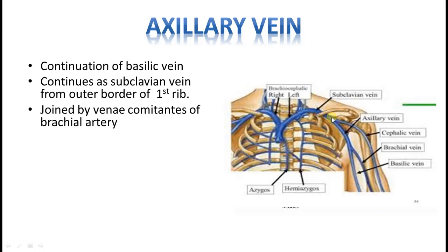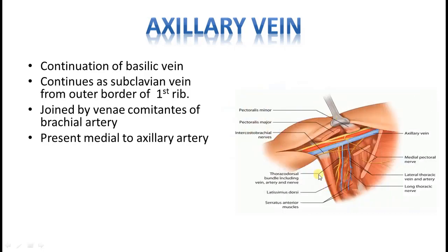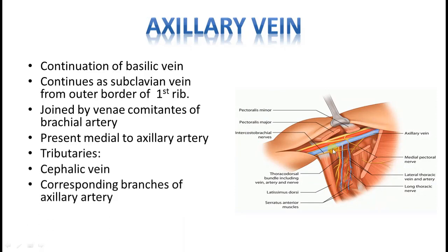The cephalic vein is a tributary of the axillary vein. The venae comitantes of the brachial vein can also be considered as formative tributaries. As I told you, the axillary vein is anteromedial to the axillary artery. The corresponding branches of the axillary artery have corresponding veins — lateral thoracic vein, superior thoracic vein, acromiothoracic vein, and anterior and posterior circumflex humeral veins.